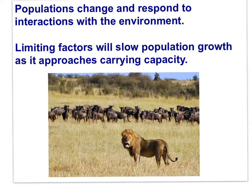Limiting factors will slow population growth rates as the population approaches carrying capacity. Limiting factors involve the community, food supply, predators, disease species, etc. The focus here is on populations — a single species — but the limiting factors that alter the rate of population growth involve the community.